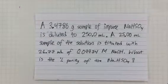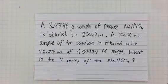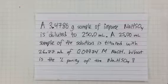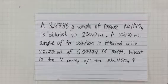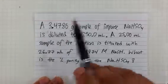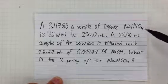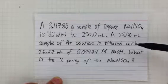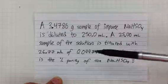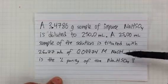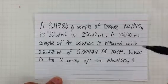We're going to continue looking at titrations. We have a solution of known concentration — a base — and a solution of unknown concentration, which is the acid. We're combining them to determine the concentration of the unknown. A 3.4786 gram sample of impure sodium hydrosulfate is diluted to 250 mL. A 25 mL sample of the solution is titrated with 26.77 mL of 0.0997 M sodium hydroxide. What is the percent purity of the sodium hydrosulfate?